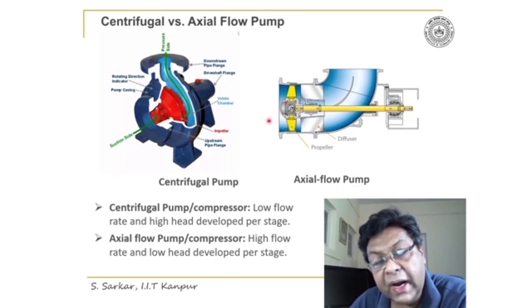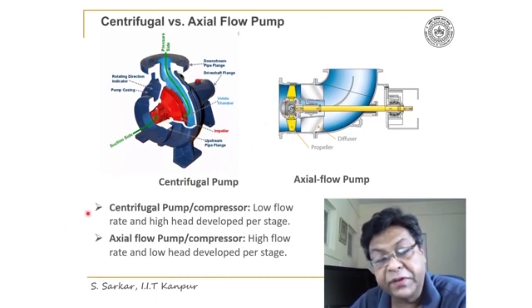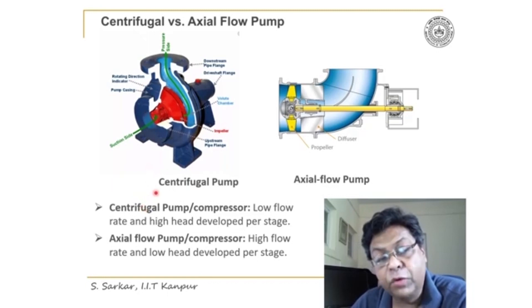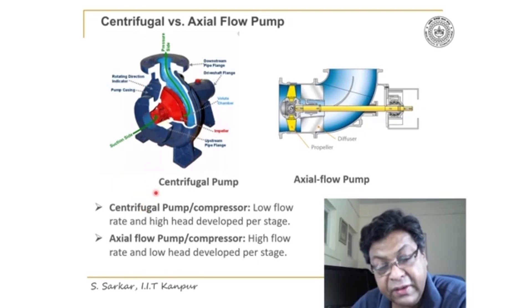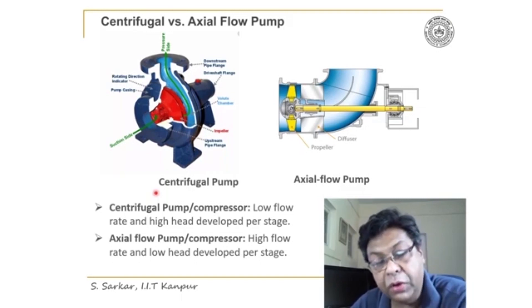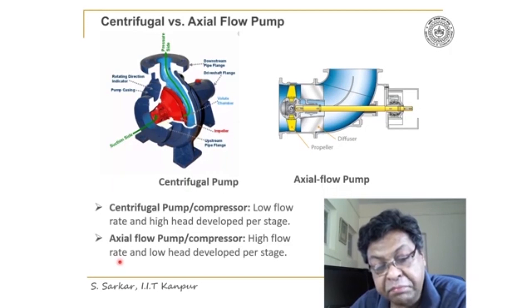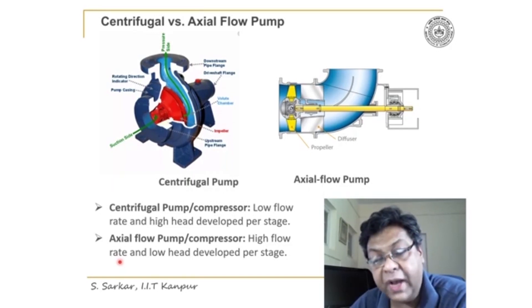In summary, in a centrifugal flow pump the pressure rise per stage is high while the volume flow rate tends to be low. On the contrary, in an axial flow pump the pressure rise per stage is low and the volume flow rate tends to be high.